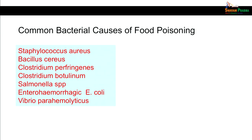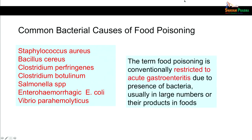Bacteria responsible for food poisoning include Staphylococcus aureus, Bacillus cereus, Clostridium perfringens, Clostridium botulinum, Salmonella species, Enterohemorrhagic E. coli, and Vibrio parahemolyticus. The term is conventionally restricted to acute gastroenteritis due to the presence of bacteria — usually in large numbers — or their products in food. Clostridium botulinum is the only exception, responsible for neurological symptoms without significant gastrointestinal symptoms.